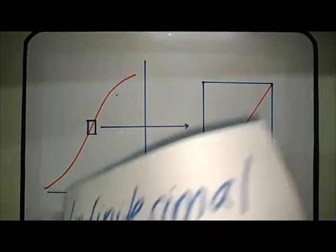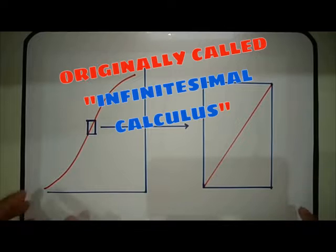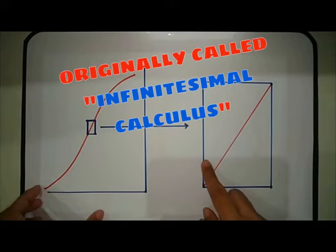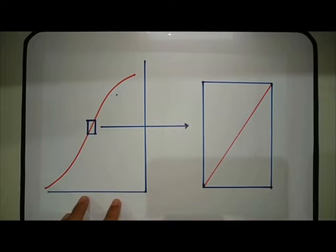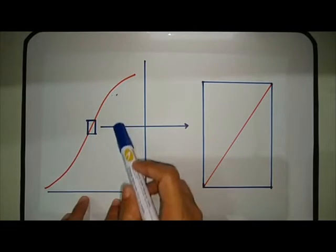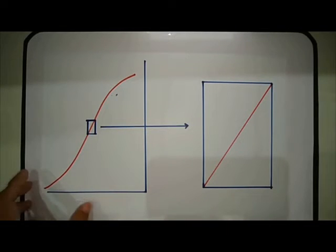This is the reason why calculus is originally called infinitesimal calculus. Calculus takes a problem that can't be done with regular math because things are constantly changing. The changing quantity shows up on a graph as curves, and it zooms in on a curve till it becomes straight, and then it finishes off the problem with regular math.